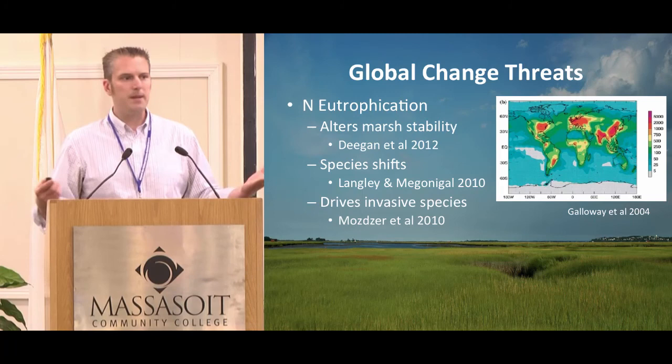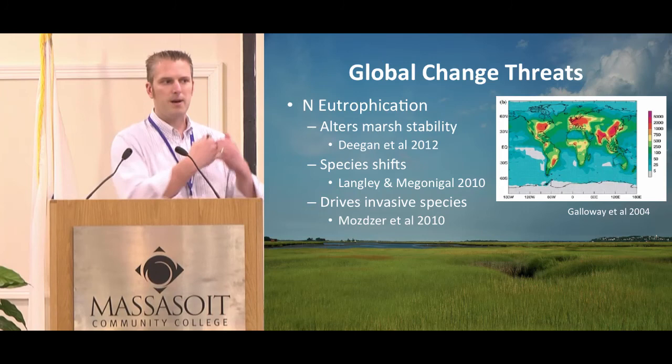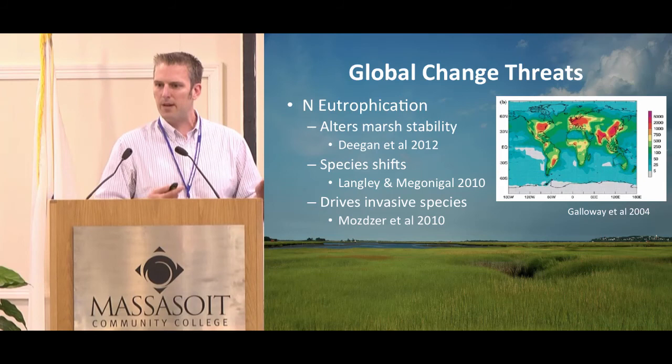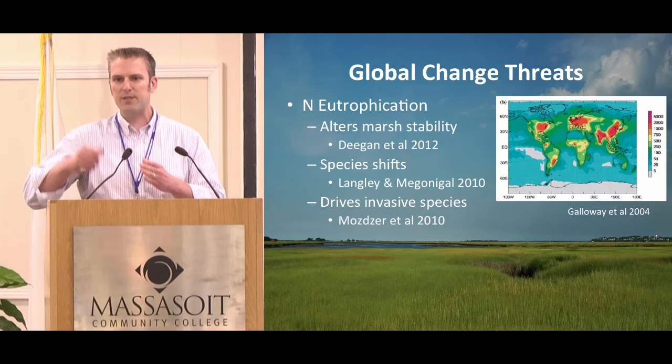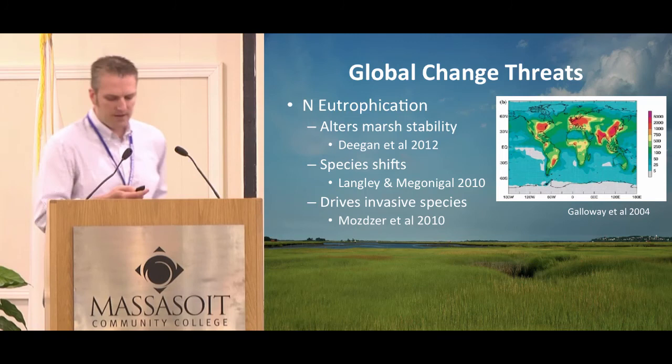In Chesapeake Bay marshes, when we add nutrients we can have complete species shifts, because certain plant species — the C4 grasses — respond to nitrogen, whereas C3 sedges don't necessarily respond. This change in plant community can have negative consequences for sea level rise resilience and can also favor invasive species.